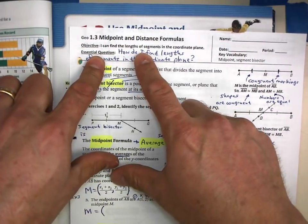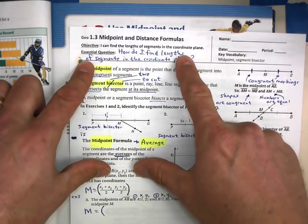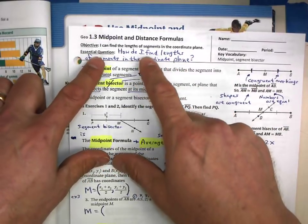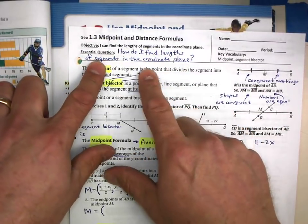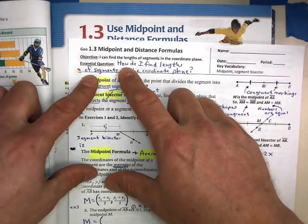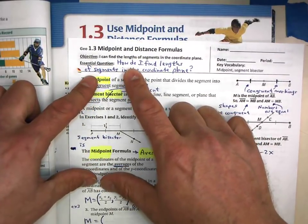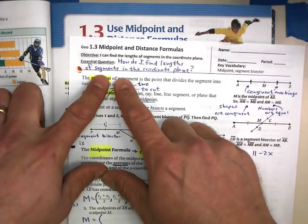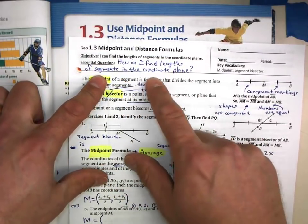Objective: I can find the lengths of segments in the coordinate plane. So let's turn that into an essential question, and you've already done that, I hope. Write out on your paper, how do I find lengths of segments in the coordinate plane?